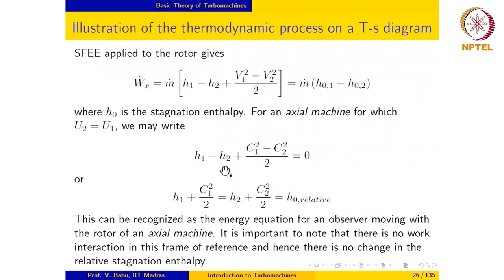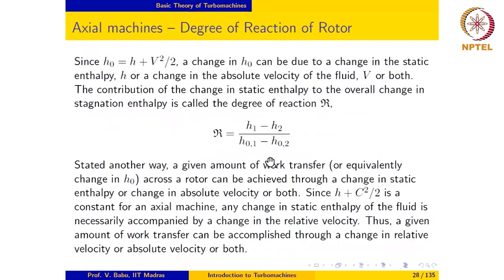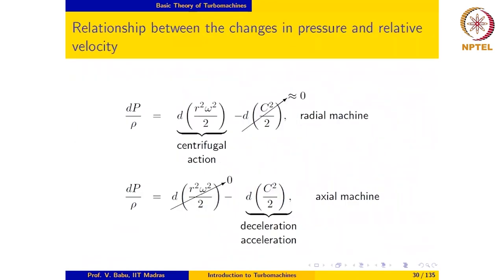In addition, in the case of an axial machine, any change in specific enthalpy of the fluid across the rotor passage always results in a change in the relative velocity of the fluid in the blade passage. Furthermore, in the case of an axial or a radial machine, any change in relative velocity in the rotor passage determines the change in pressure along the streamline which passes through the rotor blade passage.